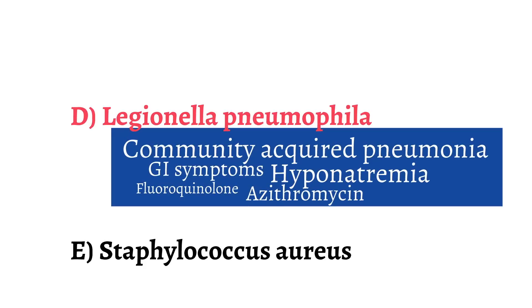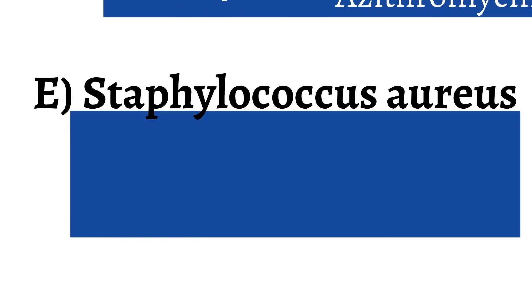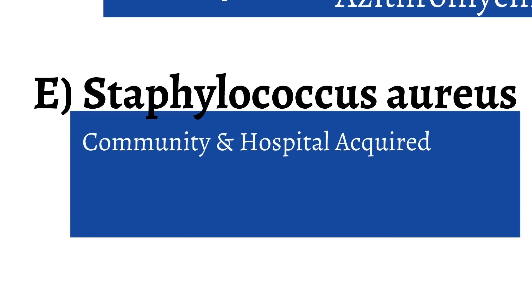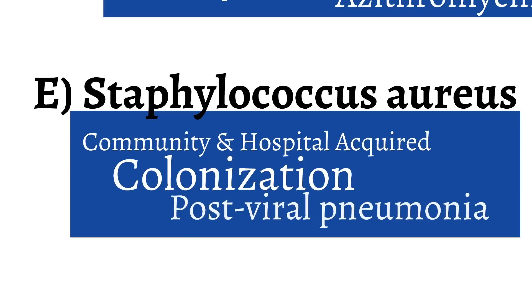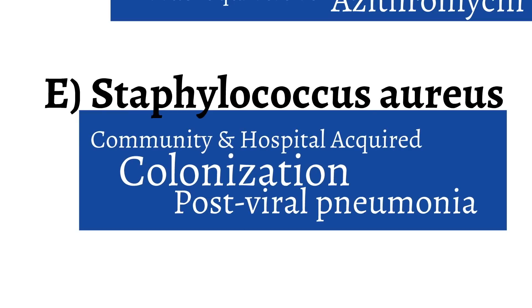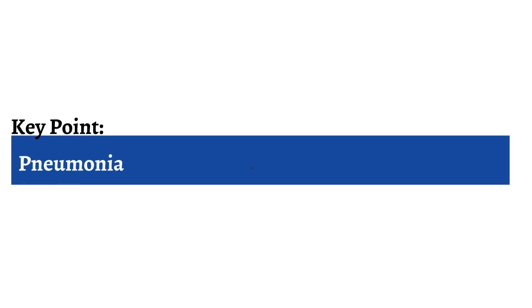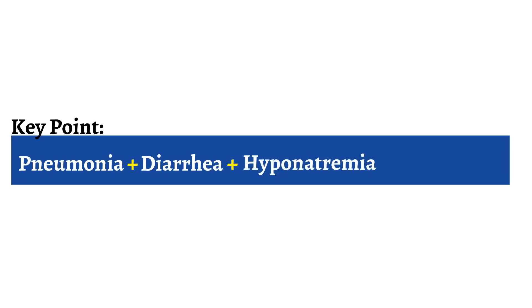Lastly, let's talk about choice E. Staph aureus has been associated with both community-acquired and hospital-acquired pneumonia. It generally occurs in patients who have staph aureus colonization of the skin. In addition, a common testing point is that patients will develop staph aureus pneumonia after getting over a pulmonary viral infection. The stem does not paint a picture consistent with a staph aureus infection, making choice E wrong and choice D Legionella the best answer. Remember, pneumonia with diarrhea and hyponatremia is most likely Legionella.